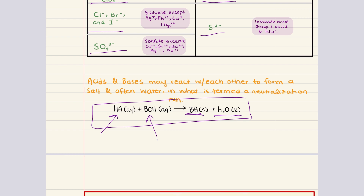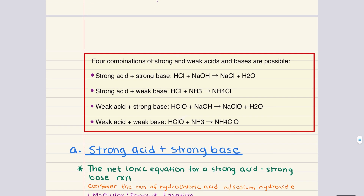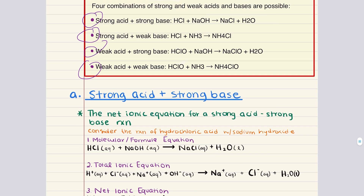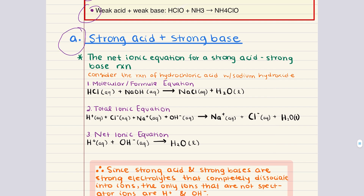Now there are four possible combinations of acids and bases in neutralization reactions, each with a different outcome. We can have a strong acid with a strong base, a strong acid with a weak base, a weak acid with a strong base, or a weak acid and a weak base. Let's elaborate on each one, starting with the strong acid with a strong base.